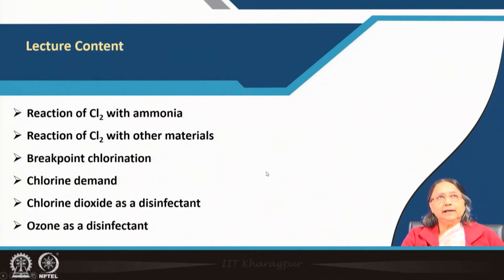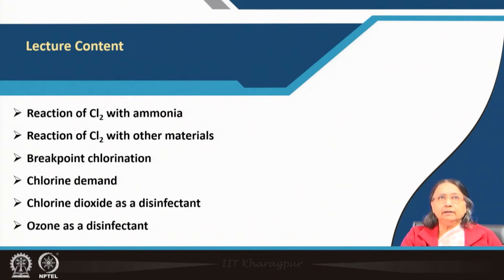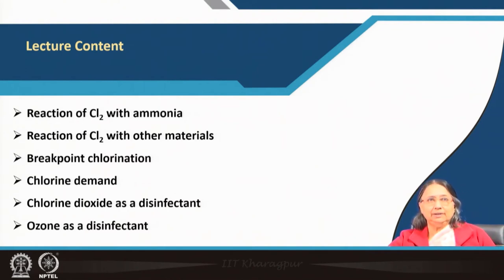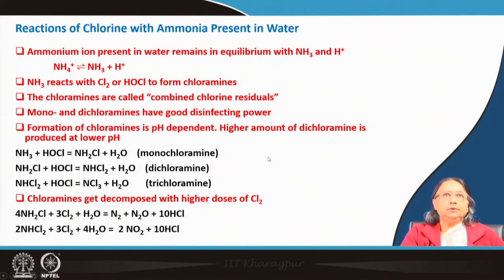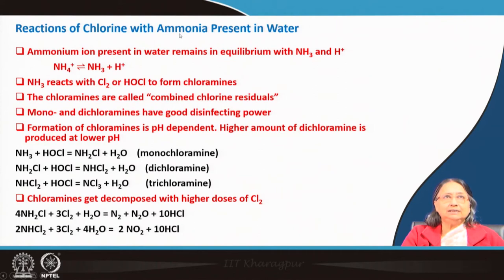I have already told you that chlorine is a very good and widely applied disinfecting agent. I already told you its history — how it started and developed — and I discussed the chemistry of chlorine, how it forms hypochlorous acid and hypochlorites. Now I will show you the reactions of chlorine with other things naturally present in water. Ammonia is produced from the degradation of nitrogen-containing organic matter, such as protein molecules.